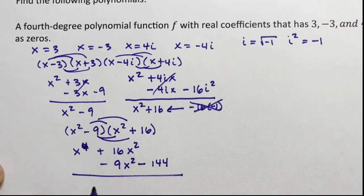And I'm going to get that f(x) = x⁴ + 7x² - 144.